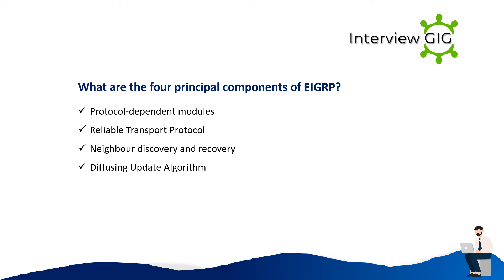What are the four principal components of EIGRP? Protocol dependent modules, reliable transport protocol, neighbor discovery and recovery, and diffusing update algorithm.